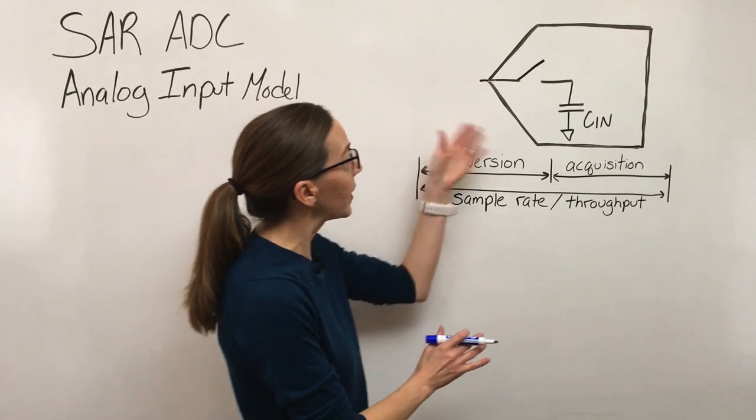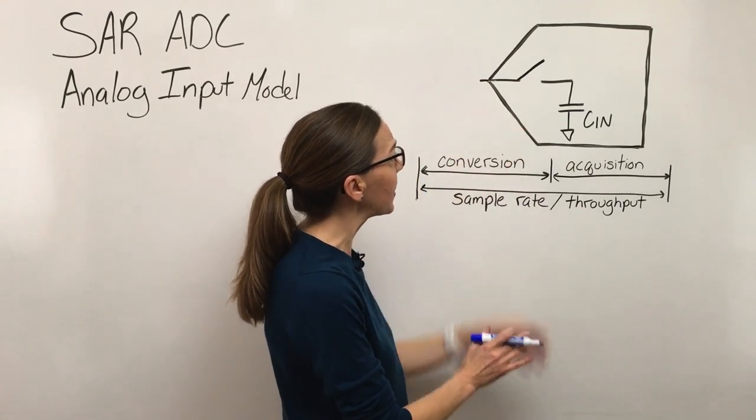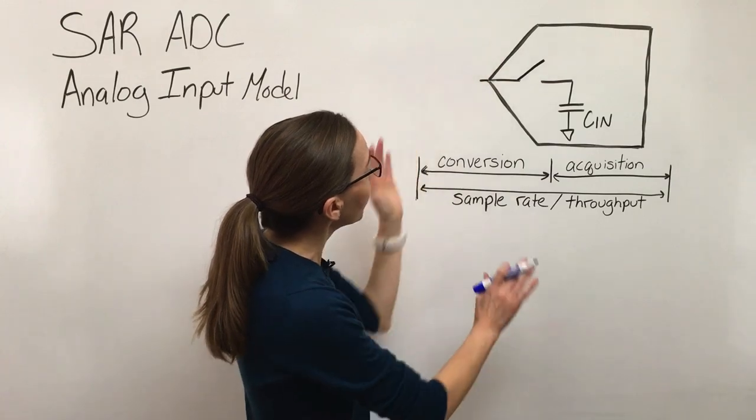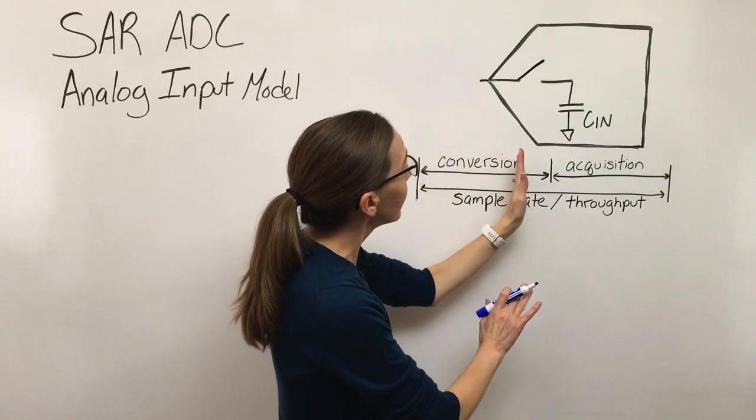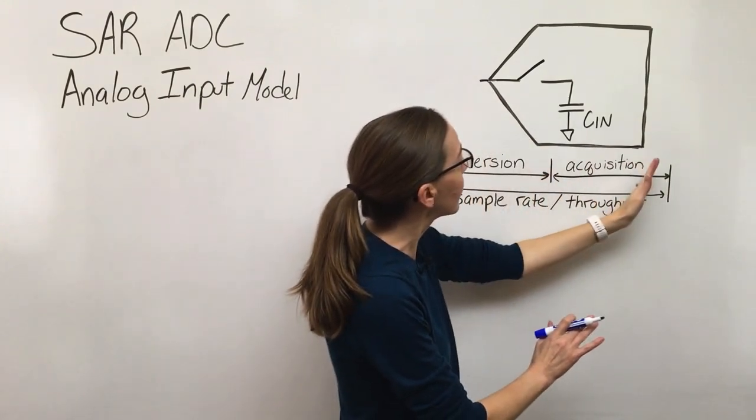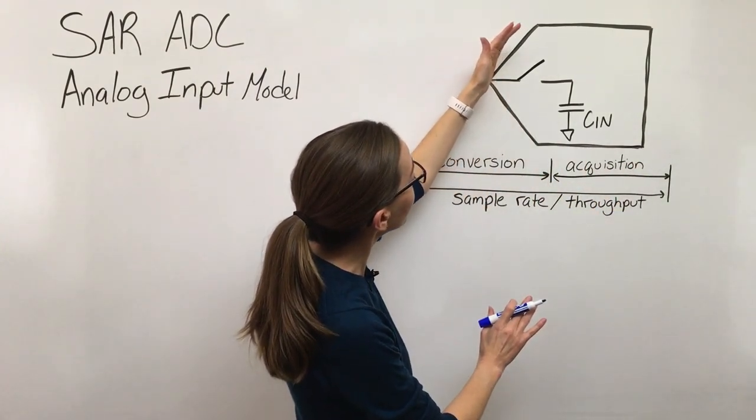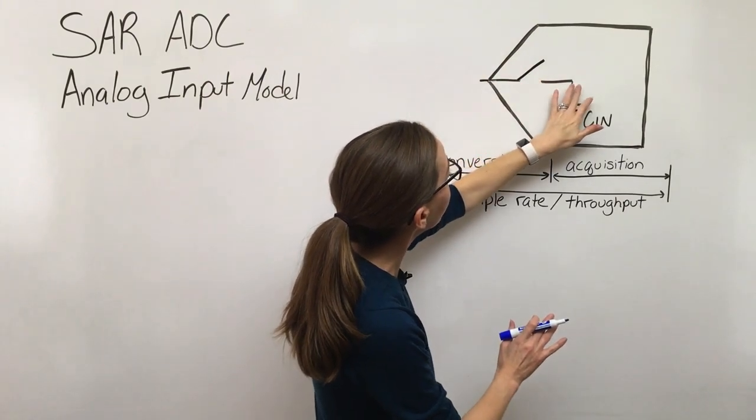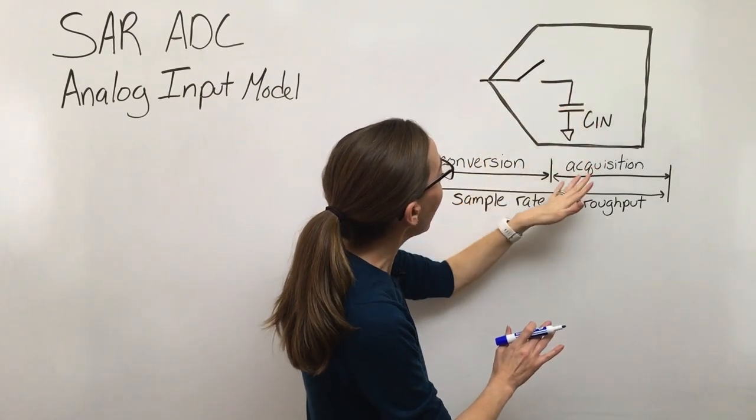The thing to understand about this very simple model of this ADC input is that we've got this switch that alternates between conversion phase and acquisition phase. When the ADC is acquiring the signal, the switch closes and whatever voltage is on this input is transferred over to the sample cap.